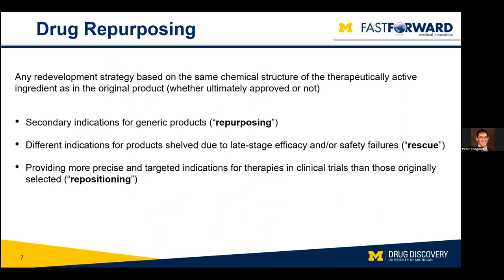Drug repurposing is one way to shortcut the lead optimization effort. If you're already starting off with a drug that was developed for another purpose, then you don't necessarily need to do all of that optimization if you're repurposing it for a new indication. We have a center here on campus led by Johnny Sexton dedicated to drug repurposing. We have a large collection of over 5,000 compounds that have all been into humans at some point — probably about half of them were approved drugs, and the other half went into human clinical trials but perhaps didn't achieve marketing status.